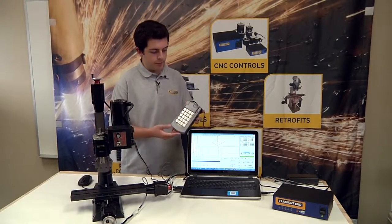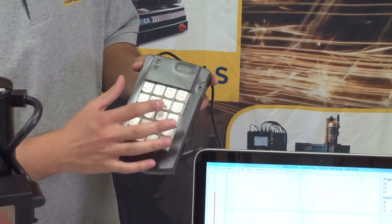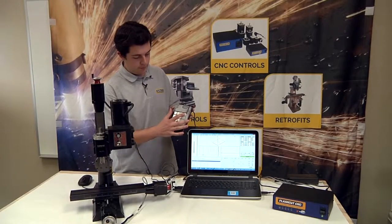As you can see we are on the green layer right now so that is a lot of the jogging activities. For example we can sit here and jog X positive or X negative.